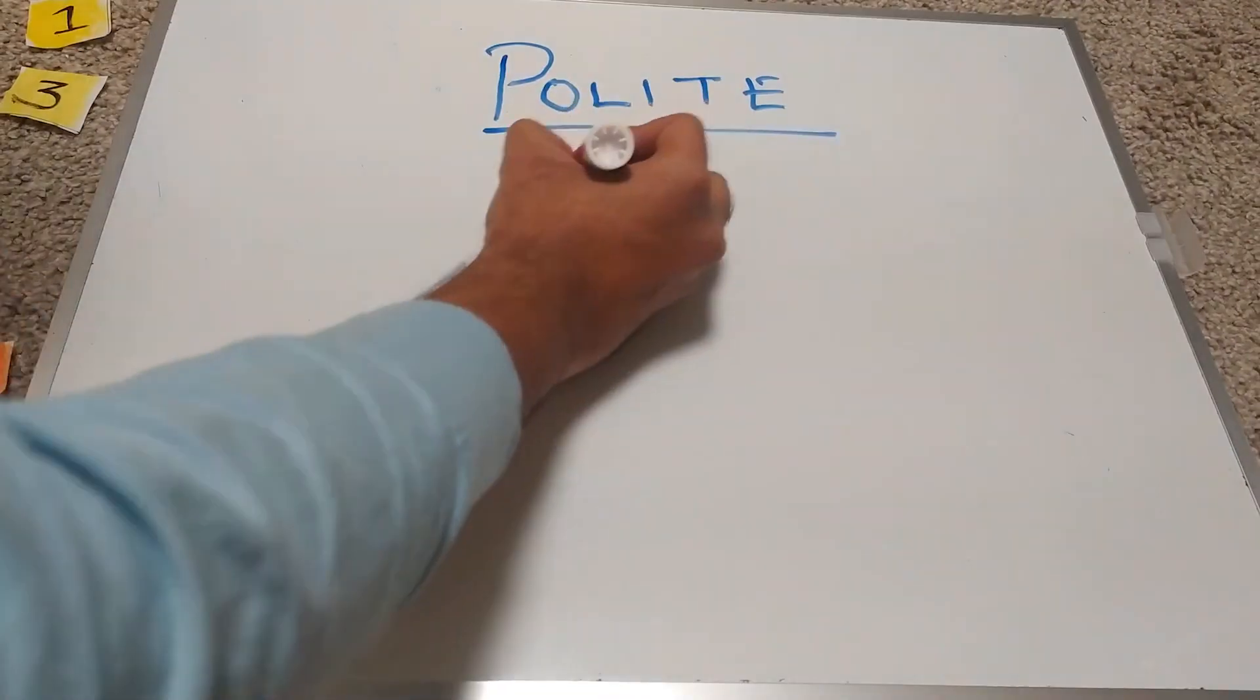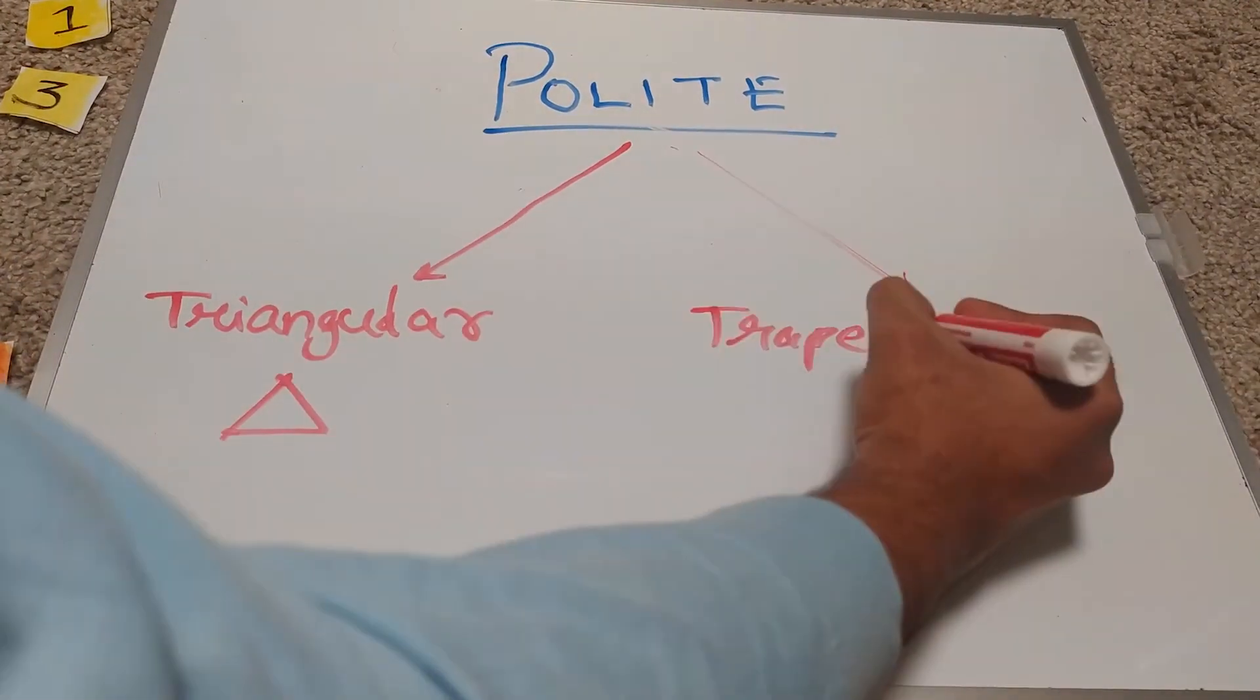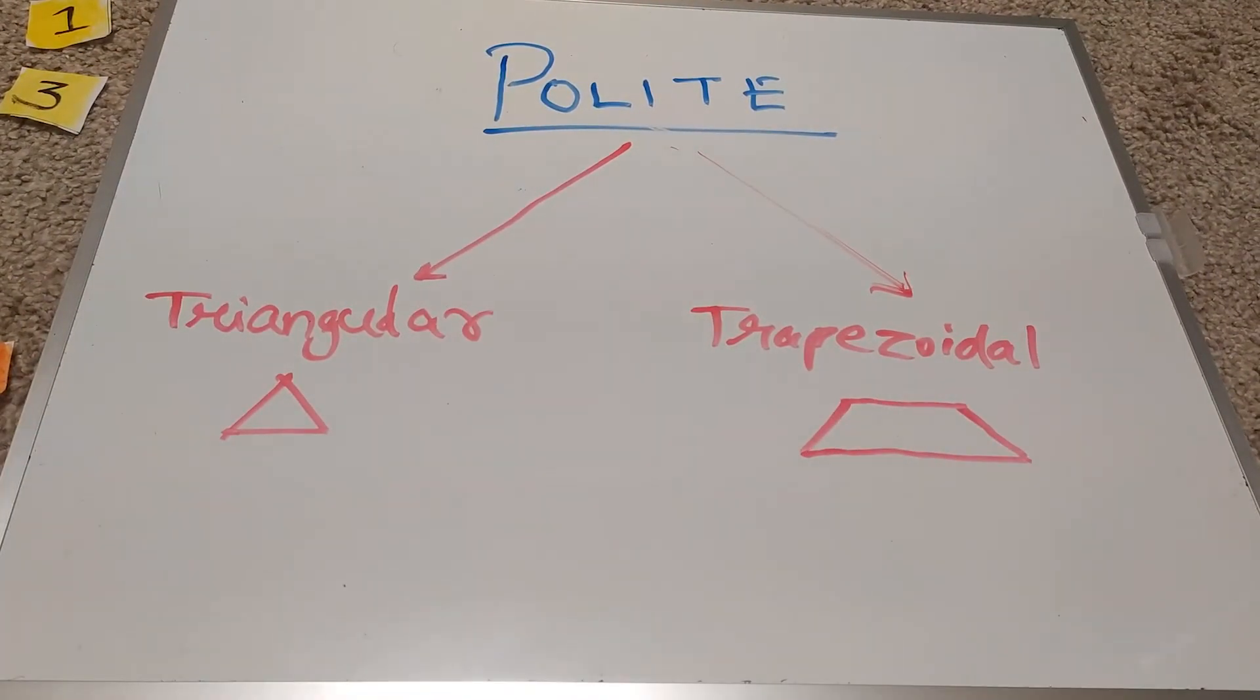A number is called polite if it's triangular or trapezoidal. In general, a number is called polite if it can be expressed as a sum of two or more consecutive natural numbers. So let's see which numbers are polite and which ones are going to be on the naughty list.